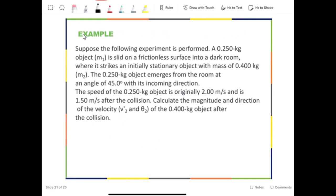Let us use this example to discuss how to solve a two-dimensional collision problem. Suppose the following experiment is performed. A 0.250 kg object, which is m1, is slid on a frictionless surface into a dark room, where it strikes an initially stationary object with mass of 0.400 kg, which is m2. The 0.250 kg object emerges from the room at an angle of 45.0 degrees with its incoming direction. The speed of the 0.250 kg object is originally 2.00 m per second and is 1.50 m per second after collision.